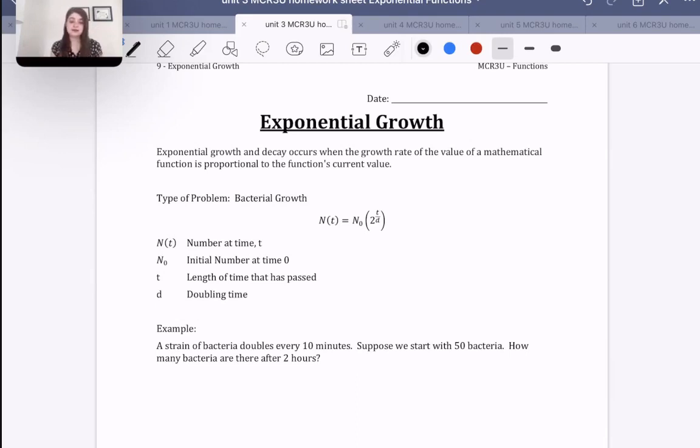One example of this is bacterial growth. It grows exponentially, or reproduction of mice, they grow exponentially very quickly. For example, here we have N(t), which is the number at time t. How many bacteria do we have at time t, whatever t is set to? N naught is the initial number at time zero. How many bacteria do we start with before we start the experiment?